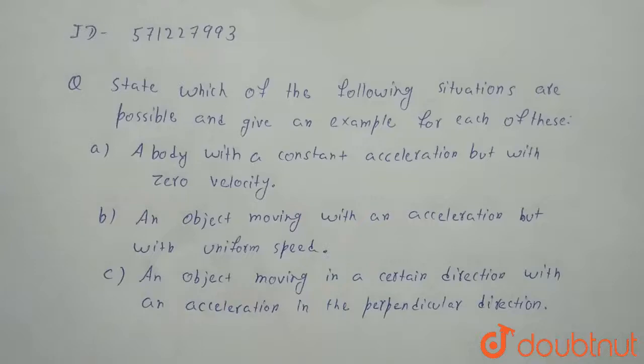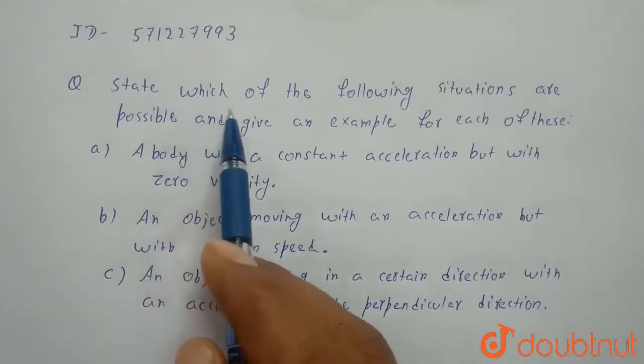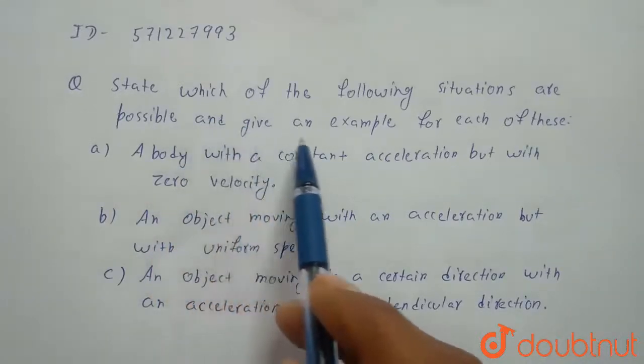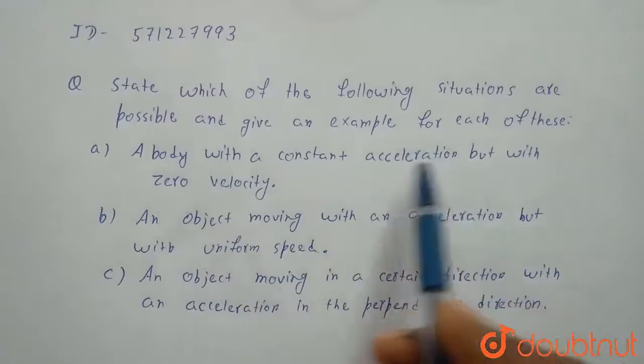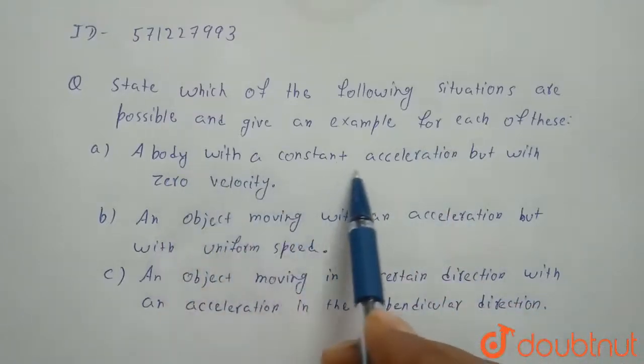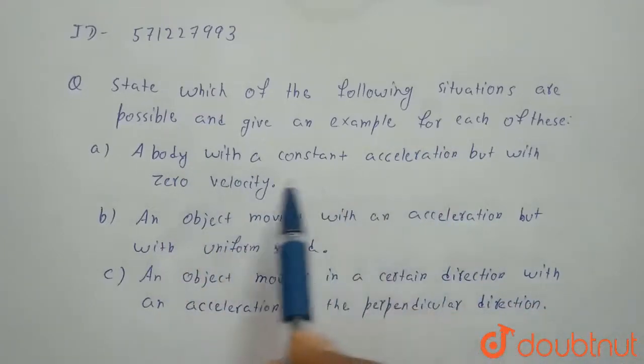Hello friends, we have this question: State which of the following situations are possible and give an example for each of these. A body with a constant acceleration but with zero velocity.